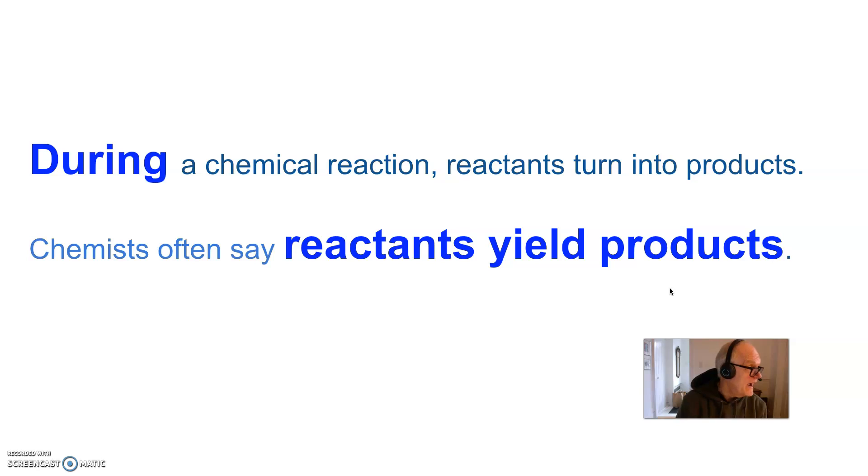During the chemical reaction, the reactants that we started with turn into the products. Chemists often use the word yields. They often say that reactants yield products.